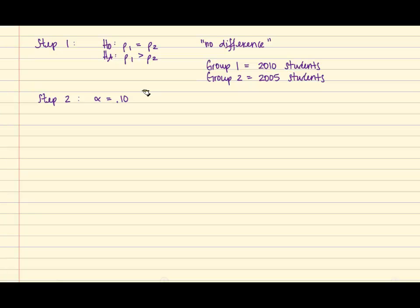So for x1, which is the number of successes for group 1, we'll need to identify that first. And we'll also need to identify x2, which is the number of successes for group 2.